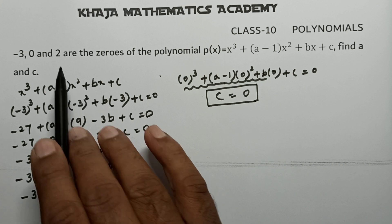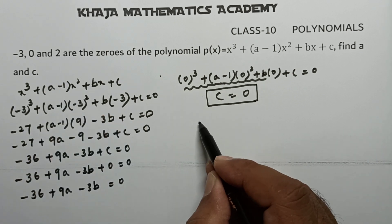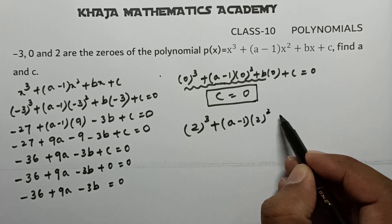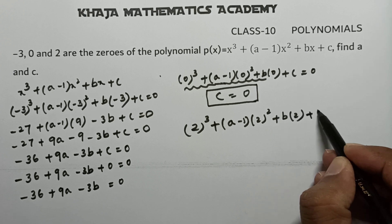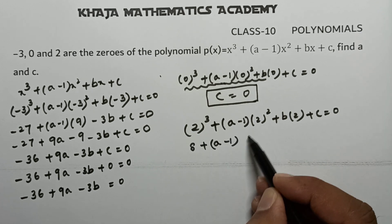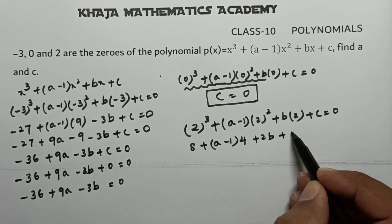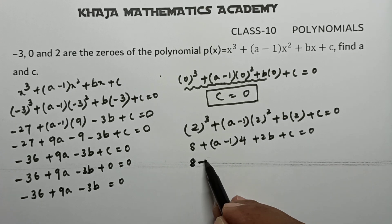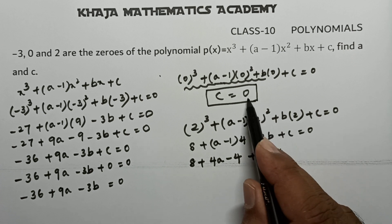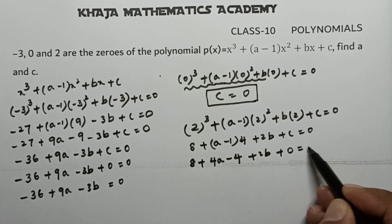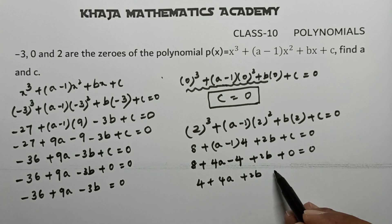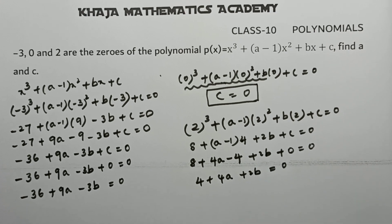Now substitute x = 2: 2³ + (a-1)(2²) + b(2) + c = 0, which gives 8 + 4(a-1) + 2b + 0 = 0. Expanding: 8 + 4a - 4 + 2b = 0, so 4 + 4a + 2b = 0. This is equation 2.